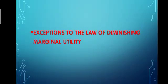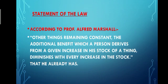Hello students, the topic today we are going to cover is exceptions to the law of diminishing marginal utility. Before covering exceptions, let's revisit the statement of the law. According to Professor Alfred Marshall, other things remaining constant, the additional benefit which a person derives from a given increase in his stock of a thing diminishes with every increase in the stock that he already has.